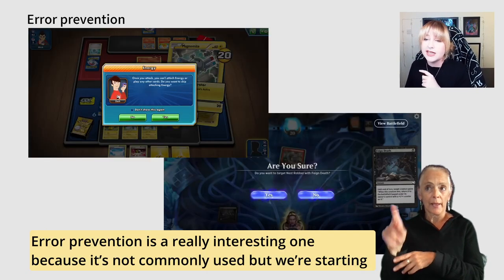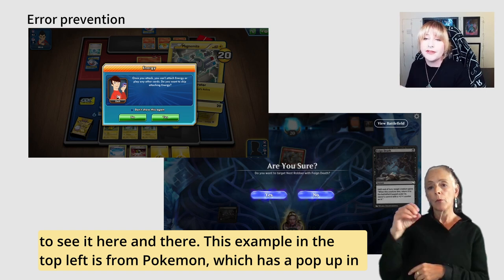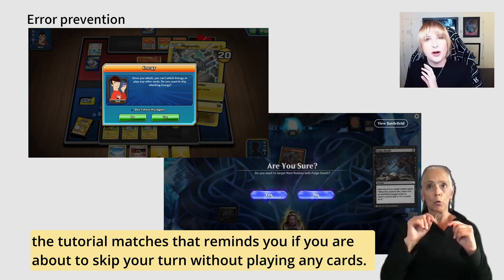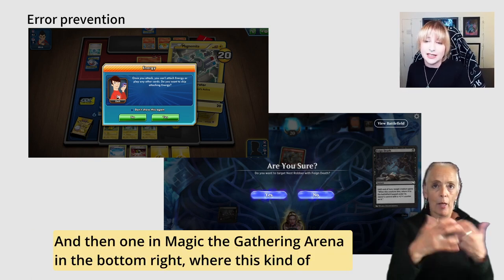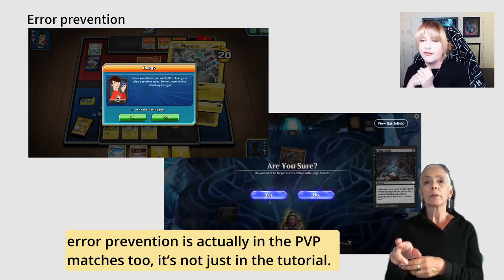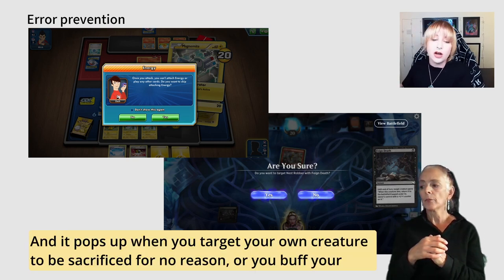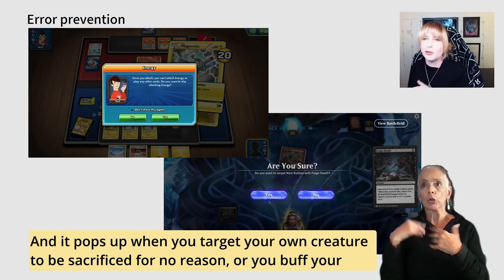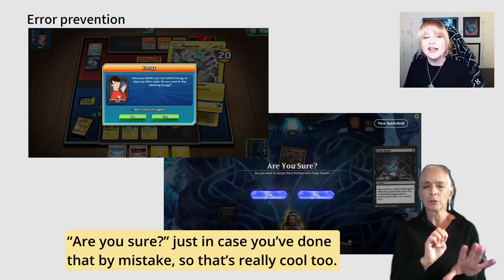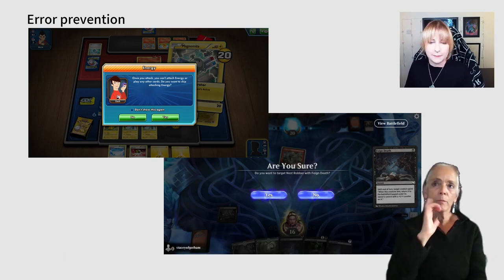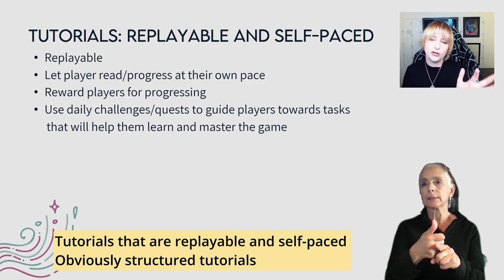Error prevention is a really interesting one — not commonly used, but we're starting to see it. Pokemon has a pop-up in tutorial matches that reminds you if you're about to skip your turn without playing any cards. Magic the Gathering Arena has error prevention in PvP matches too — it pops up when you target your own creature for sacrifice for no reason, or buff your opponent's creature, and the game gives you an 'Are you sure?' prompt just in case you've made a mistake.